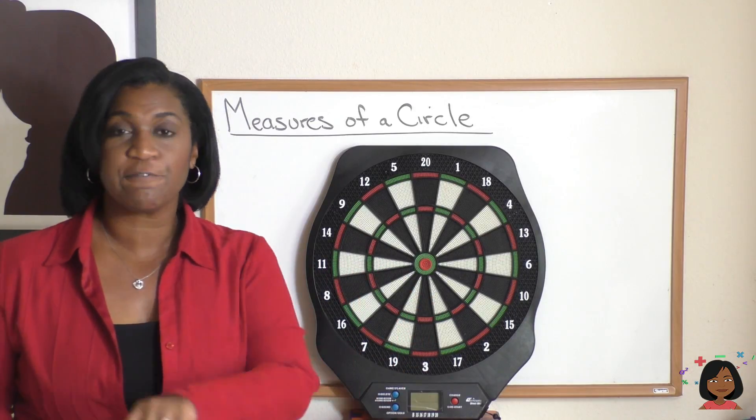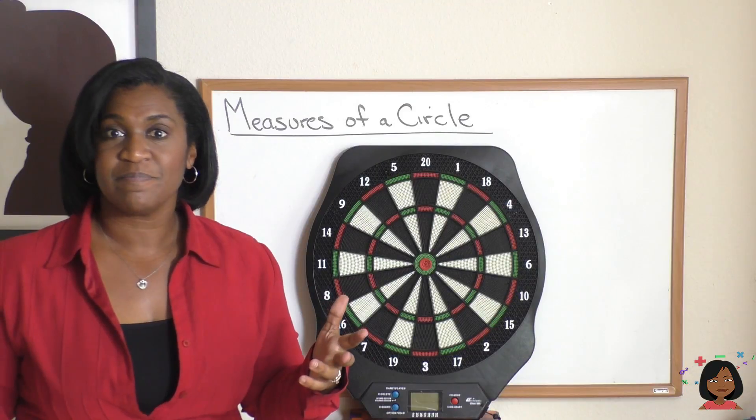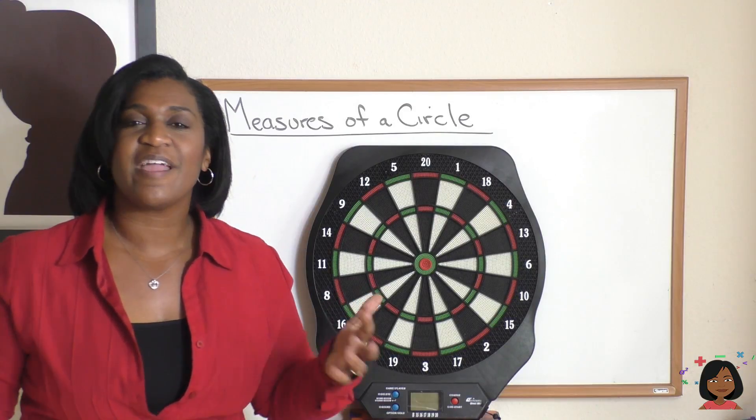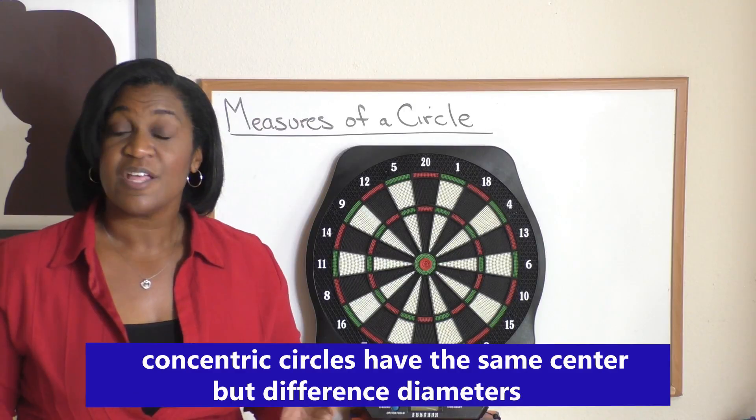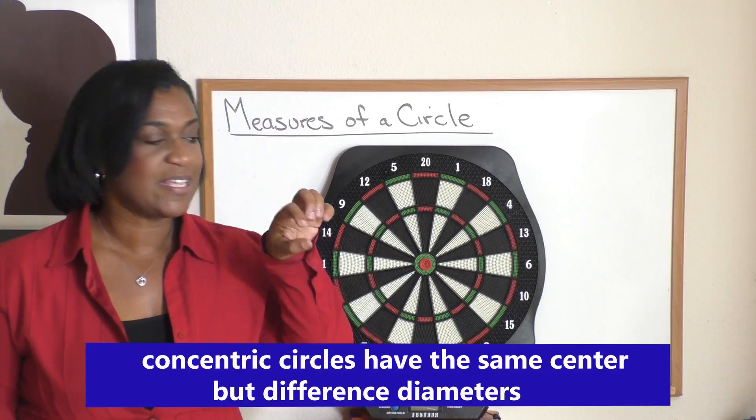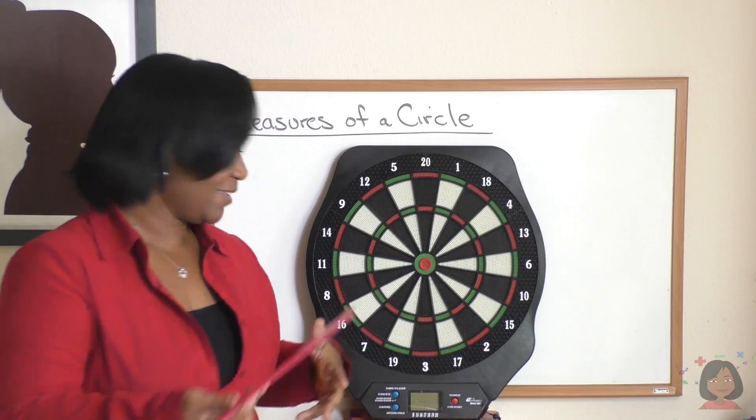And if you have circles with the same center point, but different radiuses and diameters, they are called concentric circles. They're essentially circles that can fit inside of each other.